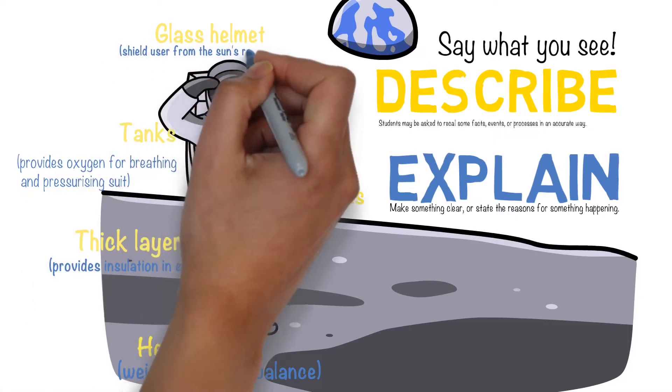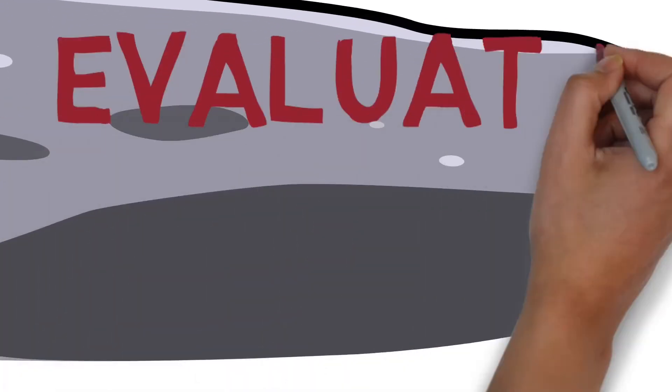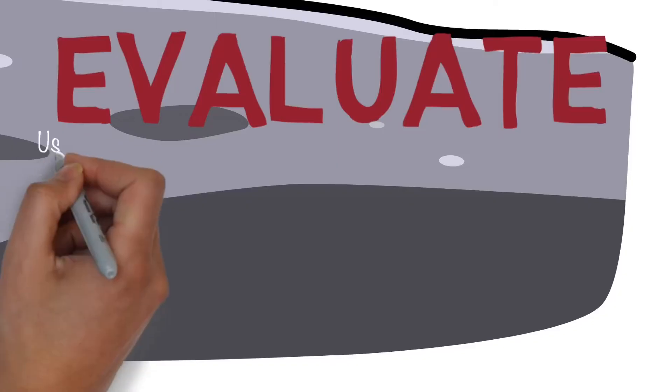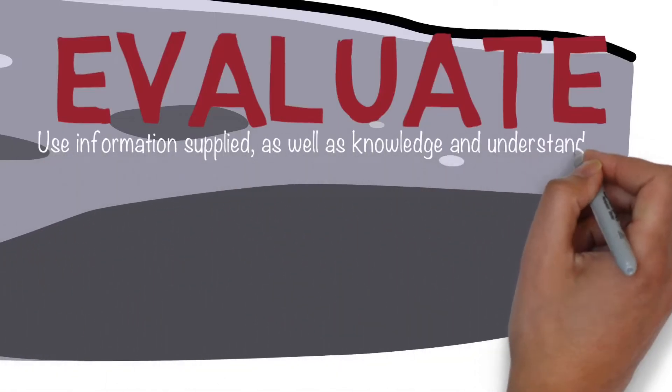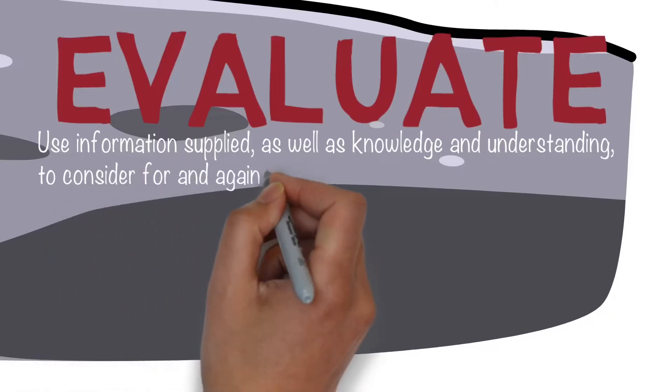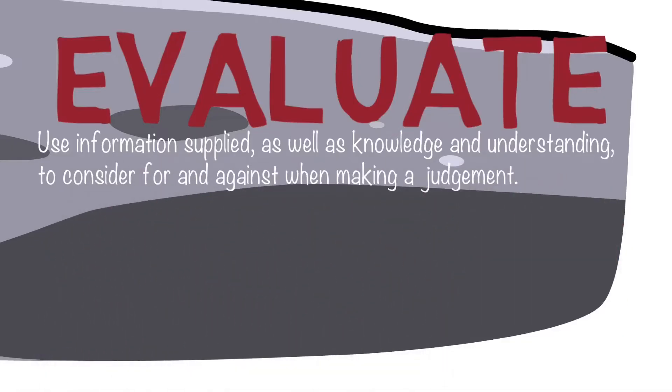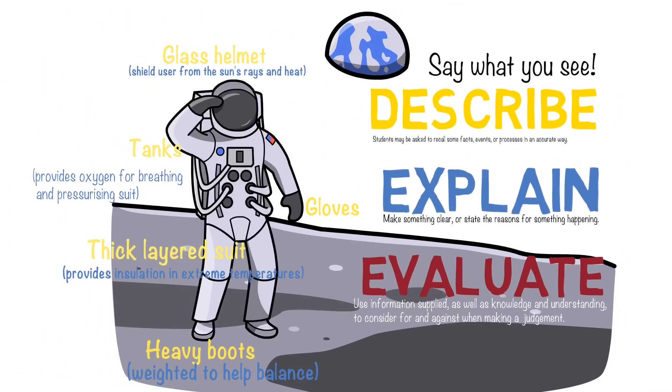Which brings us on to evaluate. Now with an evaluate question you want to use the information that you've either been supplied with or information that you already know to consider the pros and cons and then coming up with your own judgment. So looking at the space suit and evaluating it, I could say that I think it's a good suit because although it's very thick and it has a glass helmet and heavy boots, it provides the right environment for the astronaut to stay alive in.